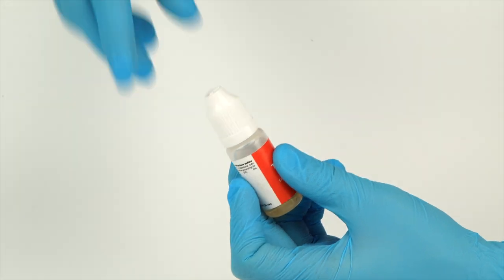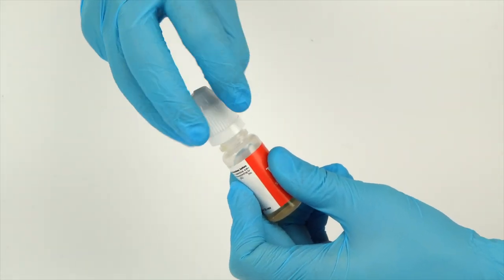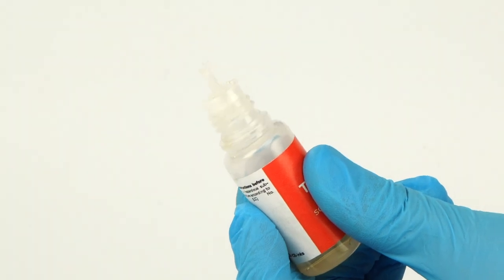To open a bottle containing a reagent, push the cap down and turn it. Carefully pierce the bottle nozzle using an unbent paper clip.